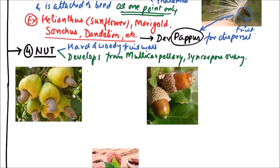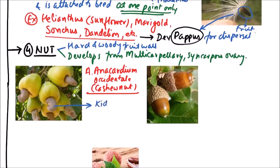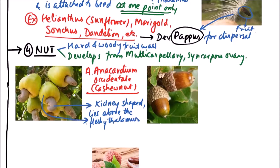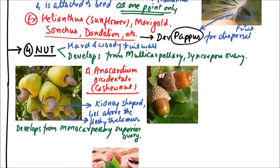The first example of a nut is Anacardium occidentale, that is cashew nut. The fruit is kidney-shaped and lies above the fleshy thalamus. This is the fleshy thalamus on which the fruit lies. Such a fruit develops from a monocarpillary superior ovary. So this is cashew nut.